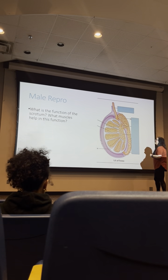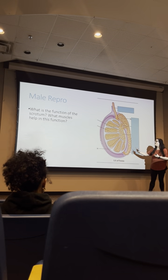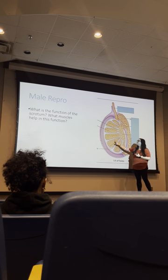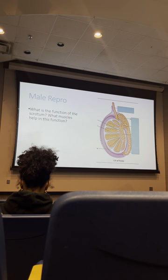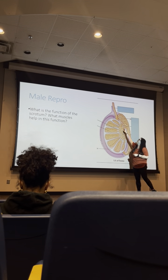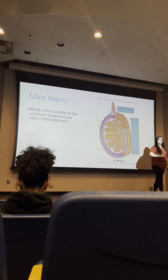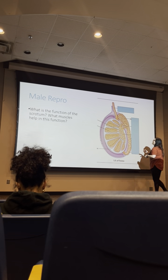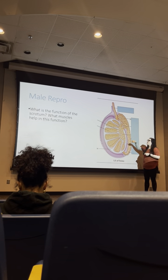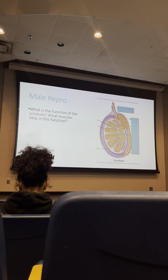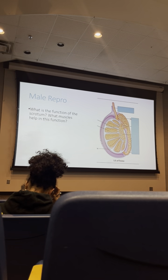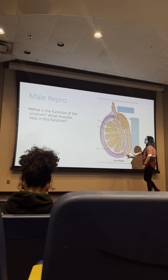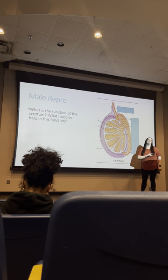In a sagittal cut of the testes, sperm drain from the seminiferous tubules in the lobules into the rete testis, then through the efferent ducts into the epididymis — which is supercoiled and packed. After the epididymis, sperm go through the vas deferens. Connective tissues include the tunica vaginalis (the purple outer layer) and the tunica albuginea (the white layer), which cushion the testes and divide the lobules.